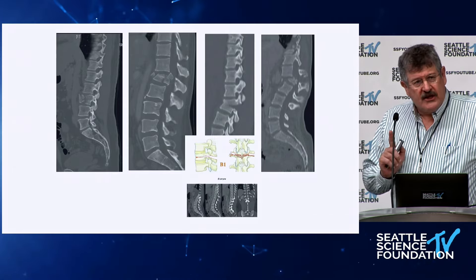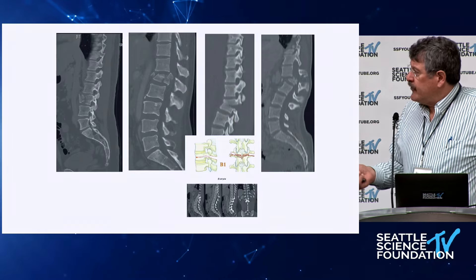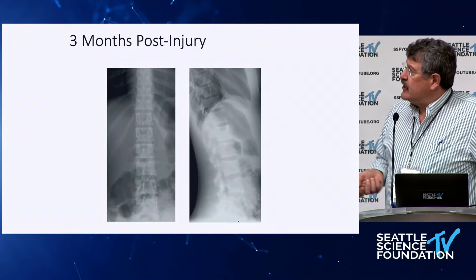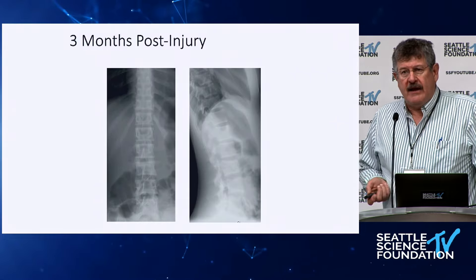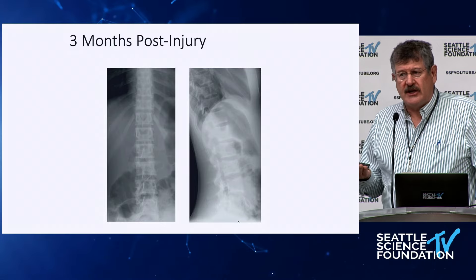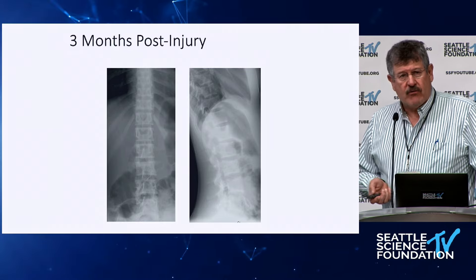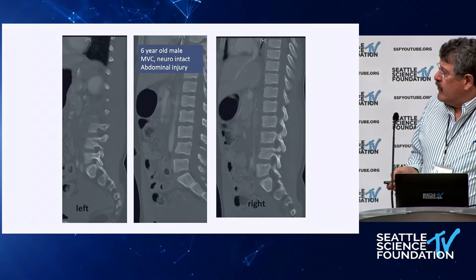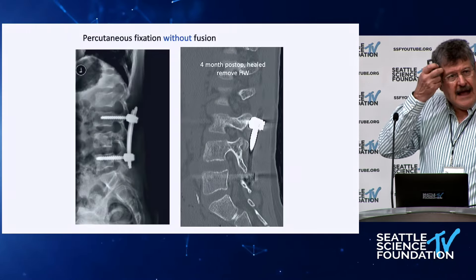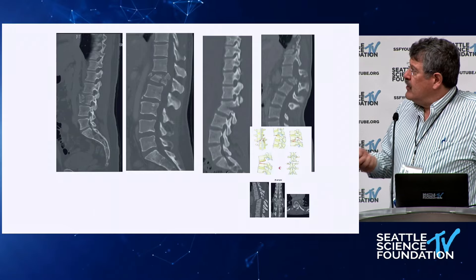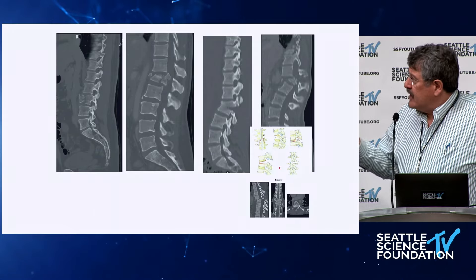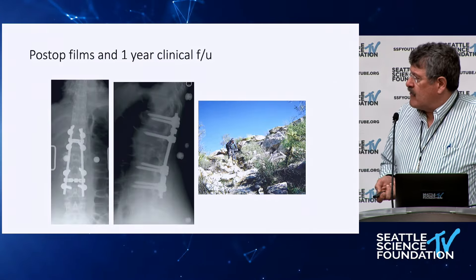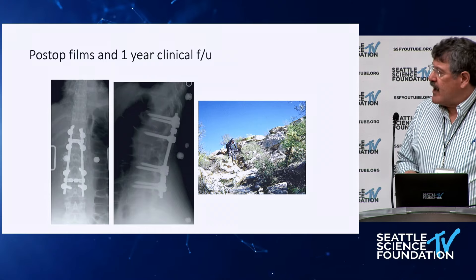The third fracture is a B1 — a pure chance fracture. This one is unique because it can be treated non-operatively: cast in extension, three-month follow-up, and you can't even tell the kid had a fracture. We often do these percutaneously now, but you can treat it in a cast or brace. That's the injury associated with abdominal things. We also did one of these with percutaneous screws. So it deserves a unique classification. And C injuries get multilevel posterior fixation — like this mountain bike racer who had a fracture-dislocation.